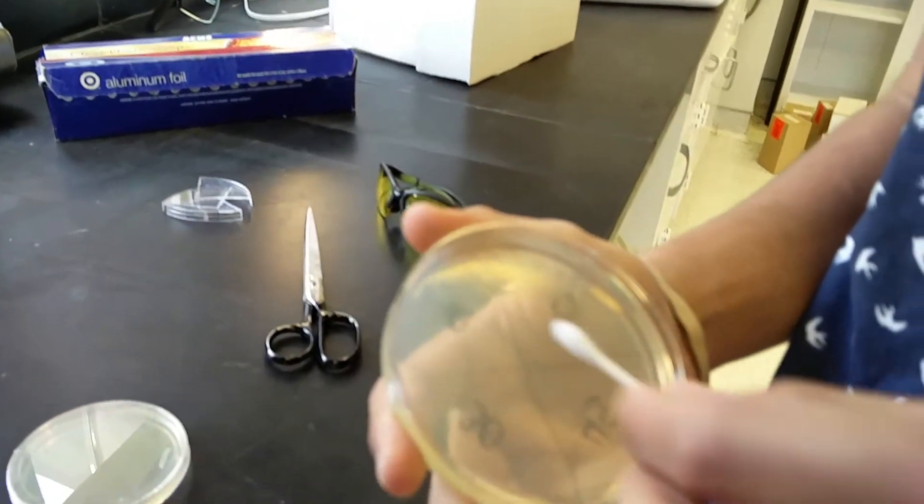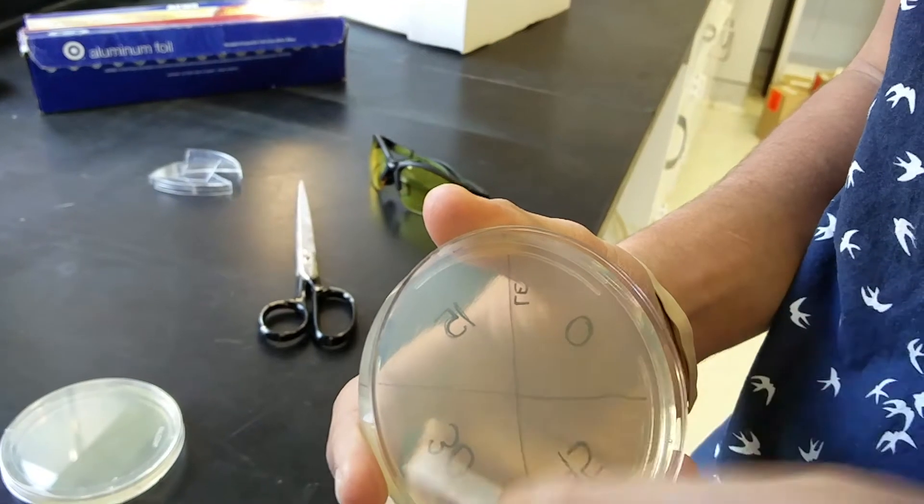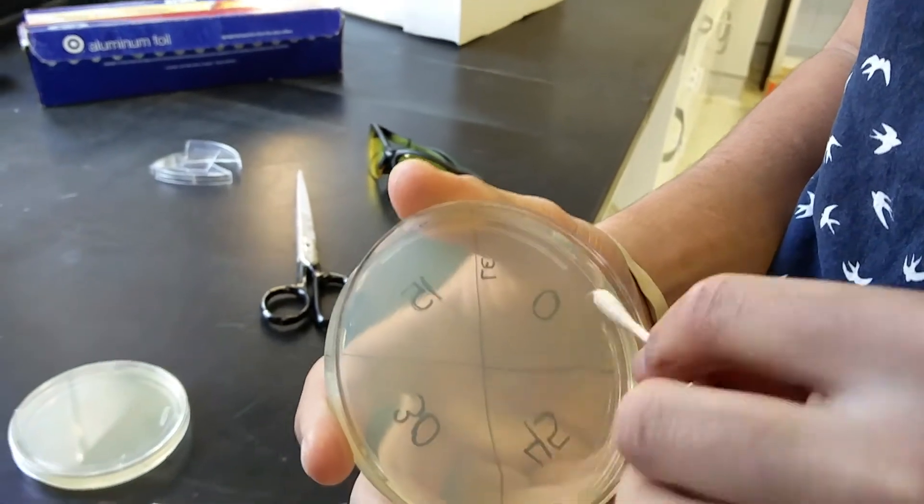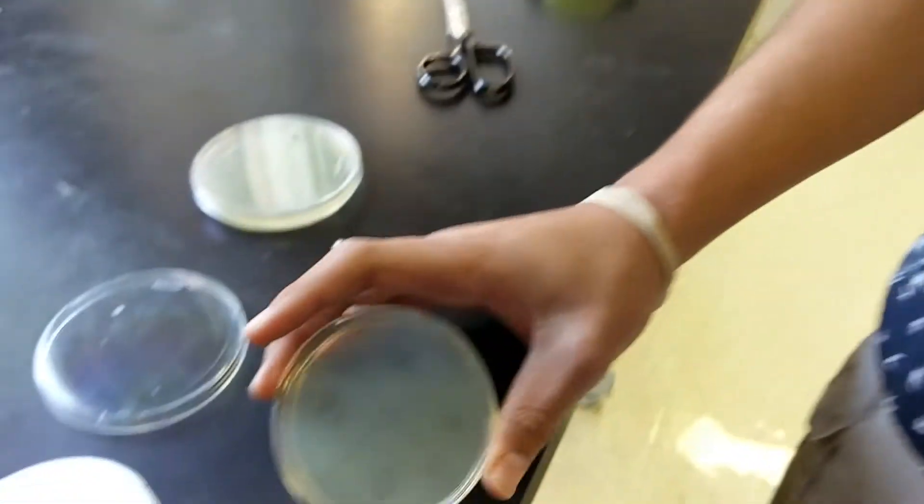Then you turn it 90 degrees and do the same thing so that you get an even number of cells on the plate. When you're finished exposing them to UV, you'll be able to compare the sections of the plate to each other.